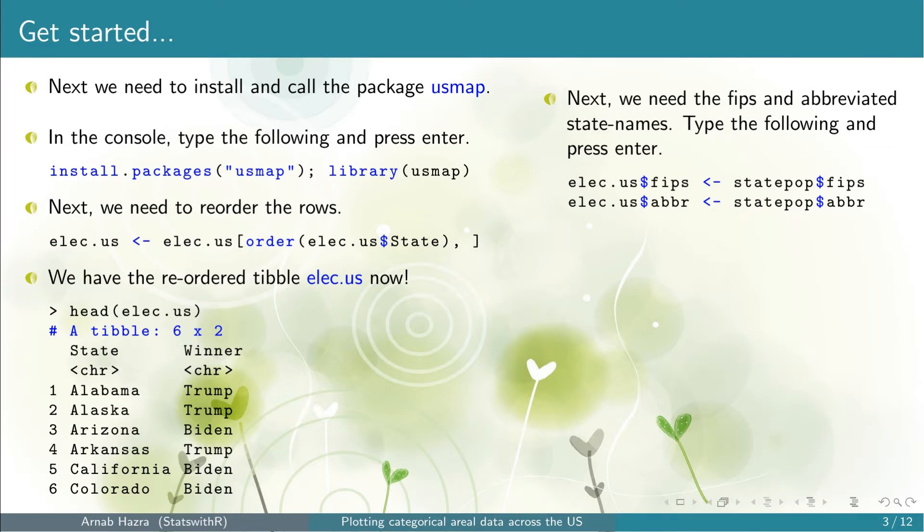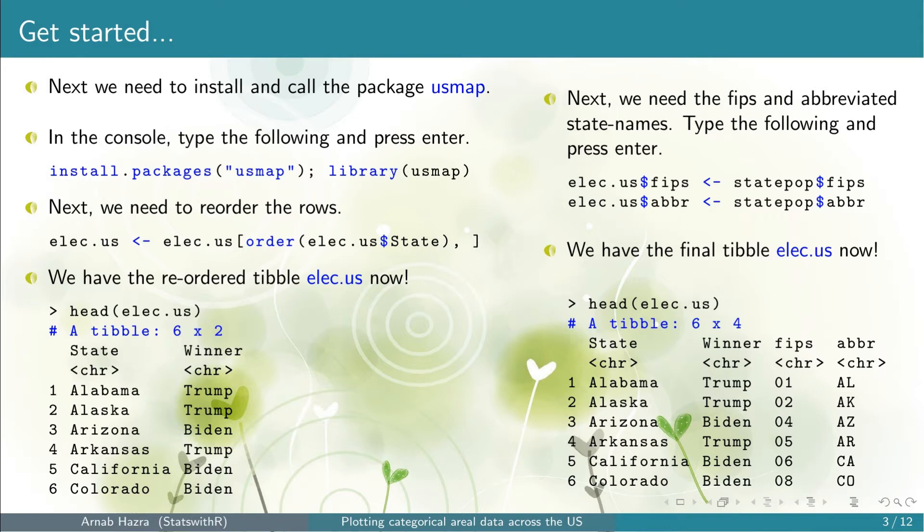So we extract them and add to the table elect.us. Once we run the code we have the final table elect.us. Note that there are two new columns: FIPS and ABBR. The variable we want to plot is winner, the second column.